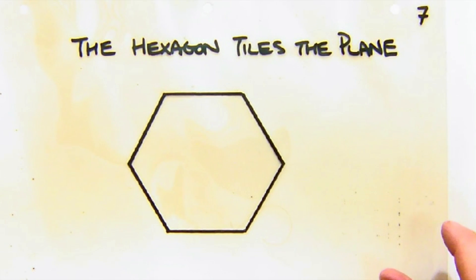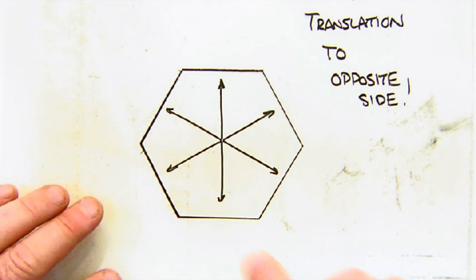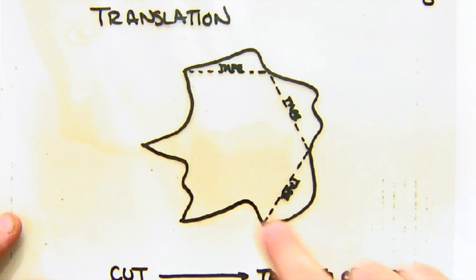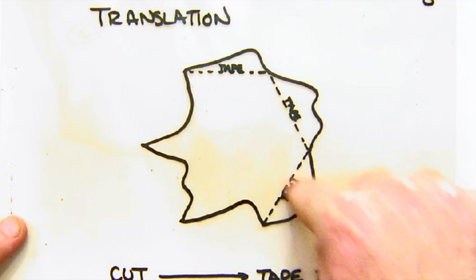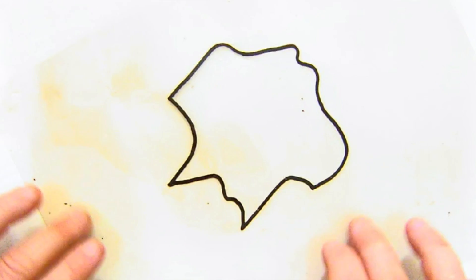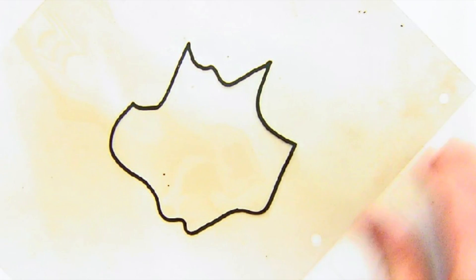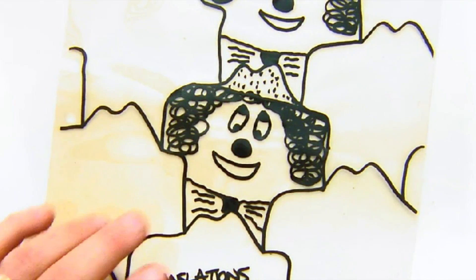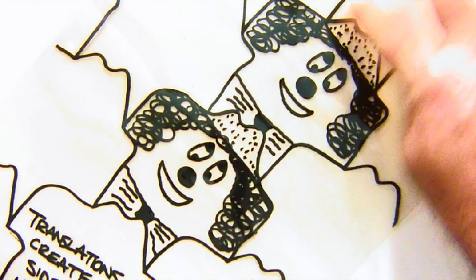Rotations and translations can work in other shapes. We know that the hexagon tiles the plane, so we could take it as our starter shape and do translations to opposite sides — just six sides instead of four in the square. Here's an example of a translation-based one: I cut from this side, slid it across, cut and slid, cut and slid. I got this shape. What is this shape? I saw this little guy who makes a clown-like looking thing. If you match them side by side, you can again see the pattern forming.